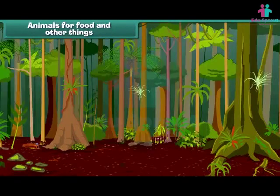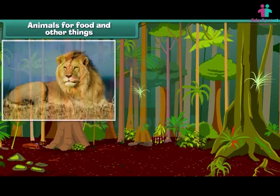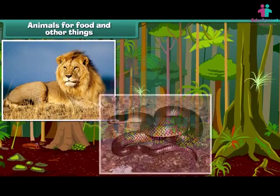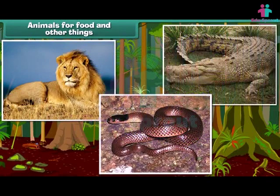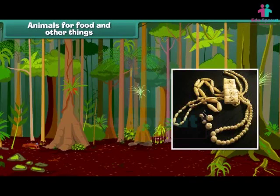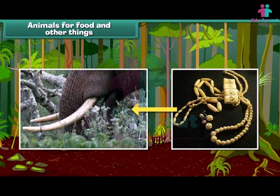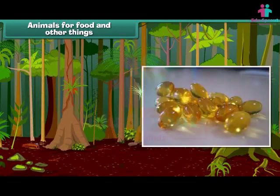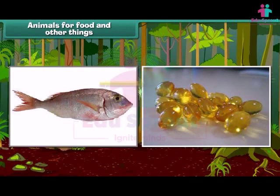Animals are useful to us. We get fur and leather from animals like lion, snake, and crocodile. Beautiful ornaments and showpieces are made from elephant teeth. The oil extracted from the liver of some fishes is used in medicines.